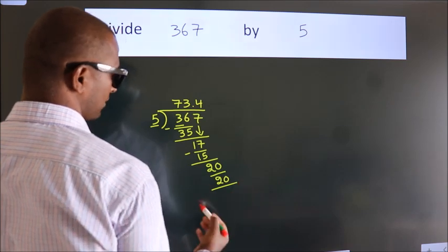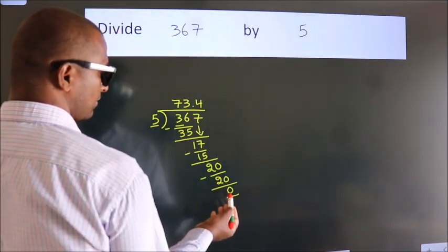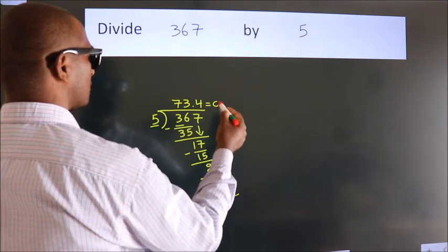Now we subtract. We get 0. We got remainder 0. So this is our quotient.